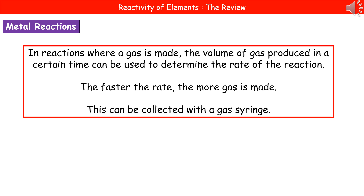If we want to work out the rate at which a reaction is occurring, and the chemical reaction is producing a gas, then the volume of gas made in a given time can be used to work out the rate of that reaction. All you do is divide the volume of the gas by the time, and that gives you the rate. The faster the rate, the more gas we're making in that same time frame. One of the best and most accurate ways to collect gas made in a reaction is using a gas syringe. So if they ask you to suggest an improvement to any chemical reaction that produces a gas, we will use a gas syringe to collect it.